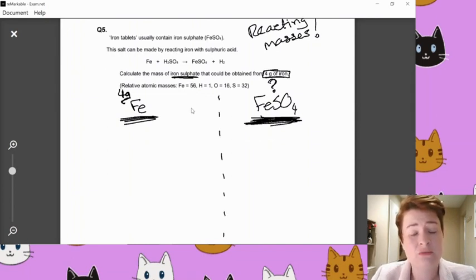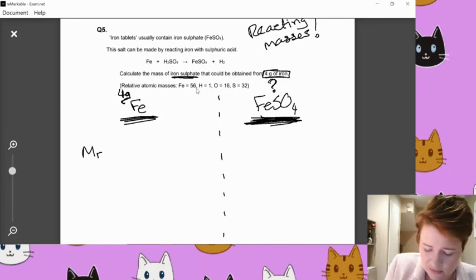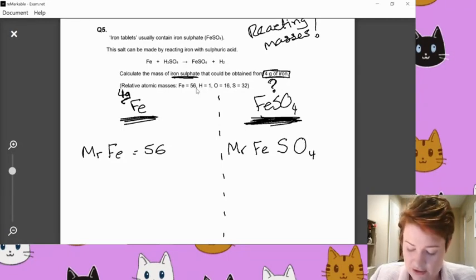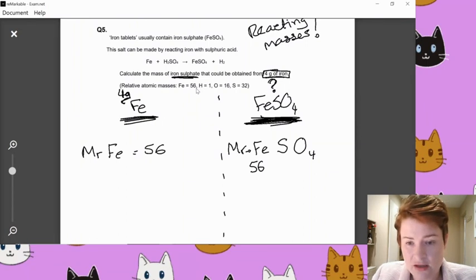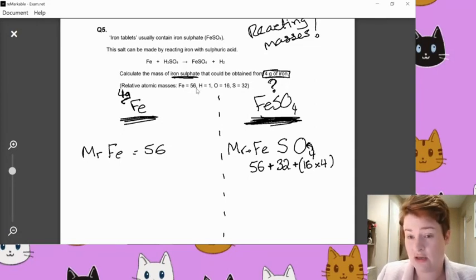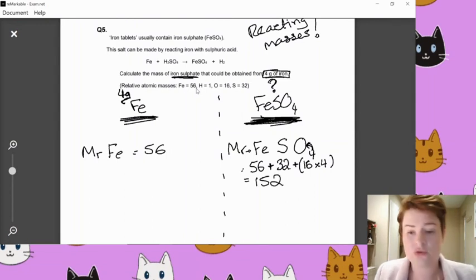The next thing that we do with these is work out the relative formula masses of each of those things. Relative formula mass of iron is just there, is 56. So I will just go Fe equals 56. The relative formula mass of FeSO4. That's a little bit cheekier, isn't it? So the Fe bit is 56. Add sulfur is 32. Add the oxygen is 16. But there's the little four there, which means there's four lots of it. Now, the four lots are just to that one element to the left of it. So only the oxygen is times by the four.